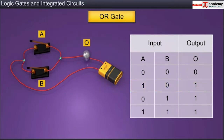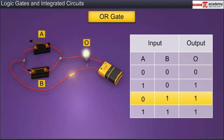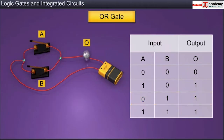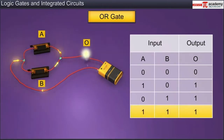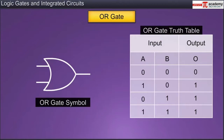When switch A is open and switch B is closed, input A is zero while input B is one; the bulb turns on, hence the output is one. When both switches A and B are closed, both inputs A and B are one; the bulb turns on, hence the output is again one. The symbol and the truth table of an OR gate are shown here. The output of the OR gate is one when either input A or input B or both are one.